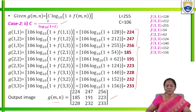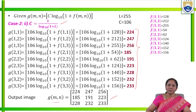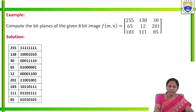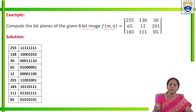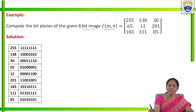This is how we perform the transformation on the given image and calculate the output image. Now let us see one simple example related to bit planes. Compute the bit plane for the given image — the image is 8-bit in size, represented as f(m, n). The pixel values are: 255, 138, 30, 65, 12, 201, 183, 111, and 85.